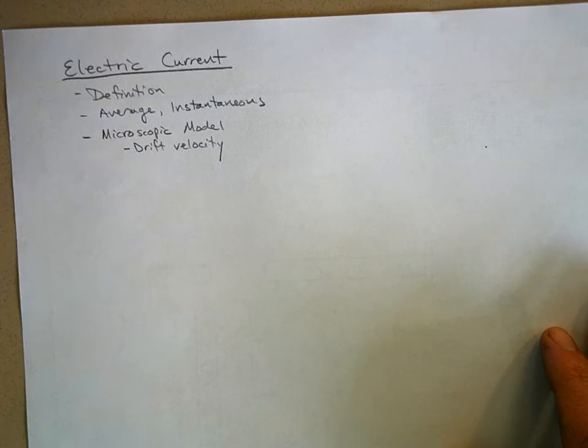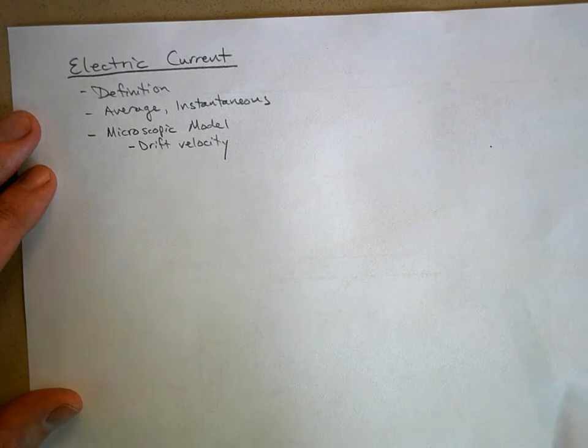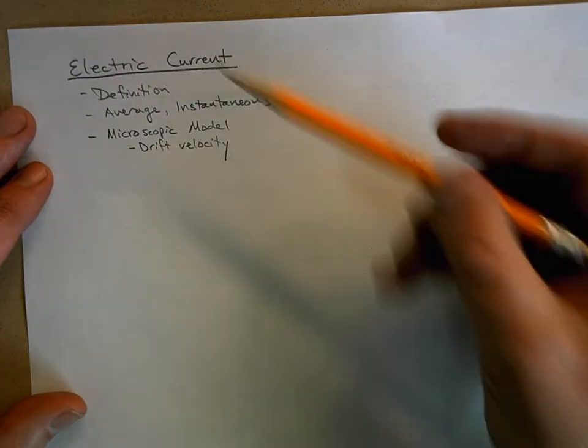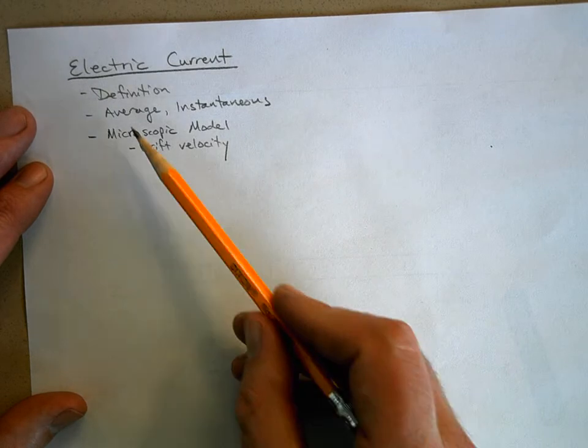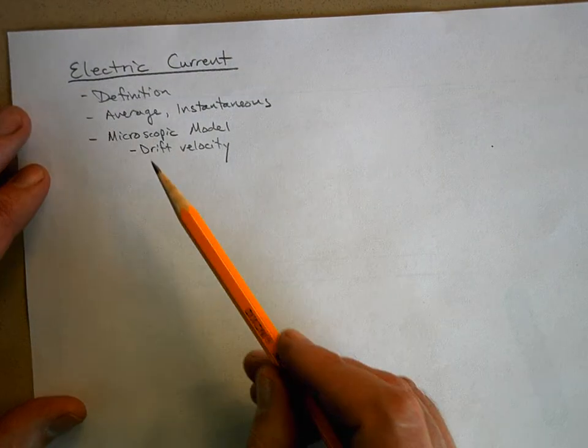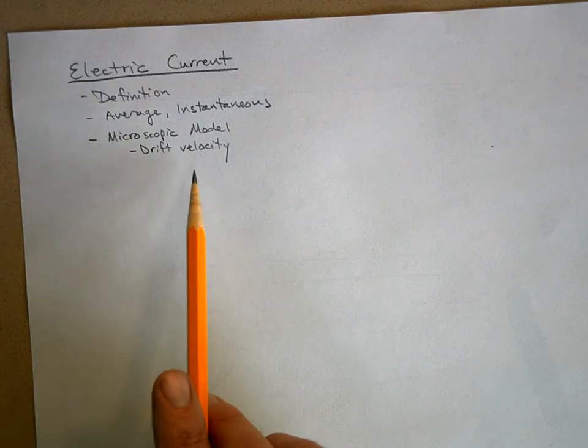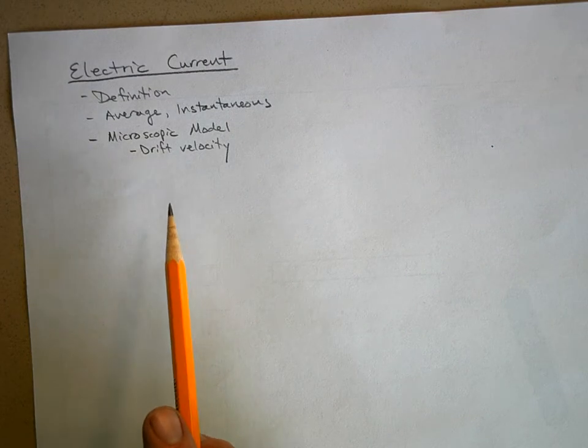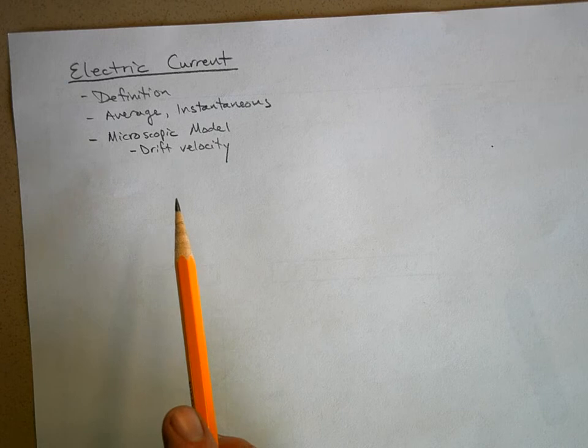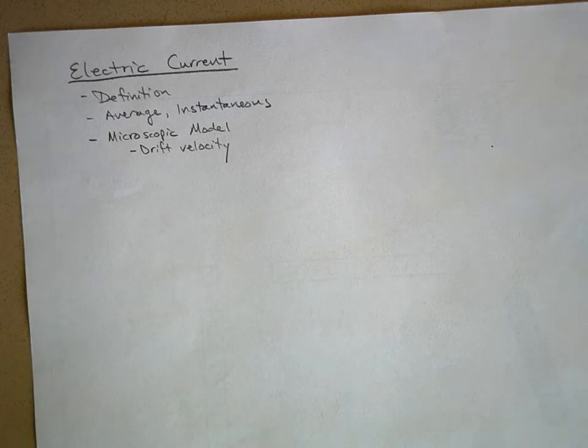We're going to talk about current now. We're going to define what current is, we'll come up with an expression for average and instantaneous current, and then we'll talk about a microscopic model and drift velocity.